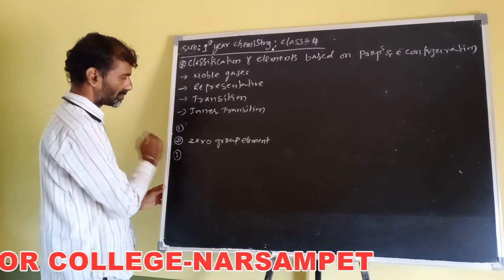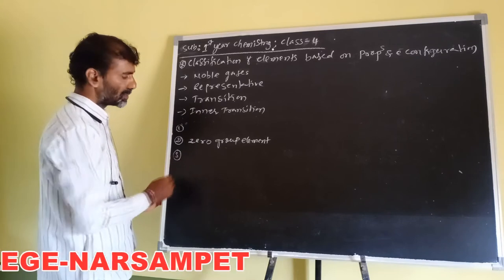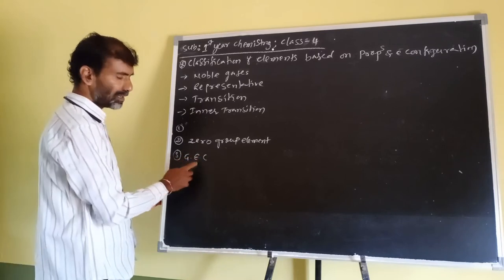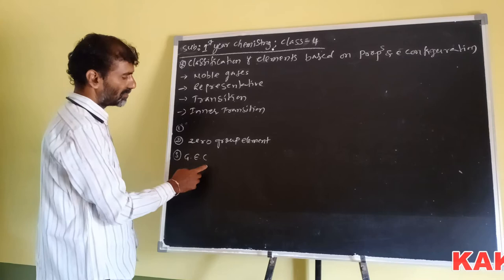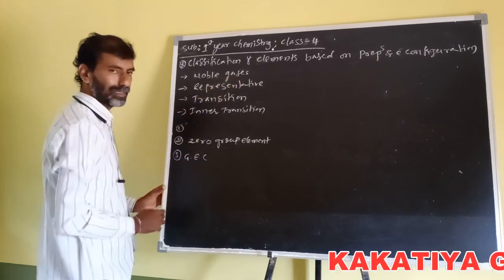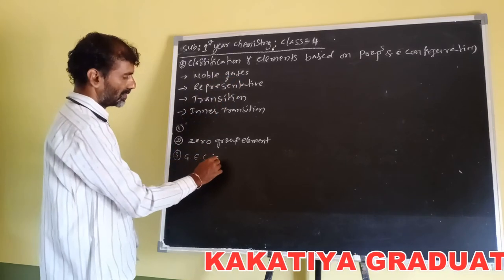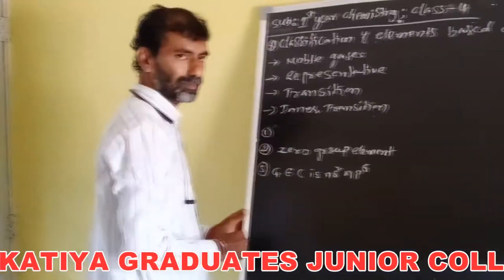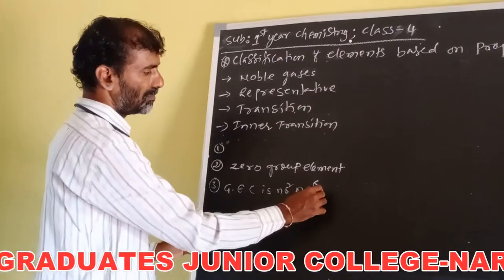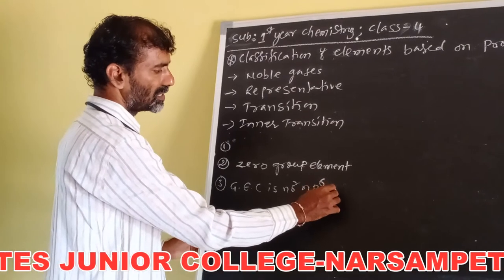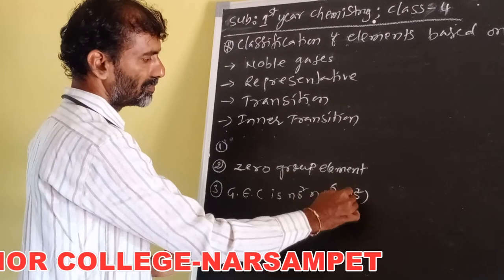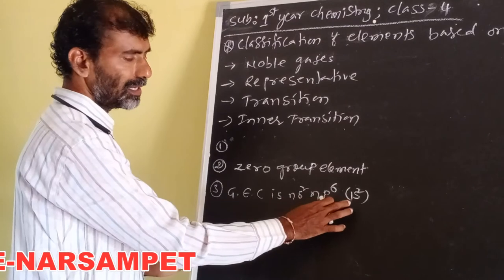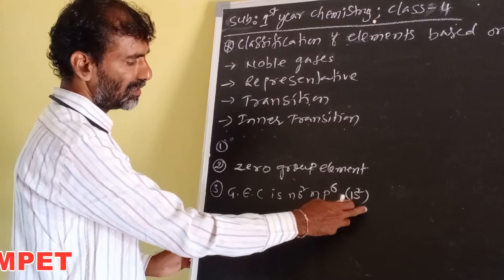The general electronic configuration of noble gases is ns2, np6, except helium whose electronic configuration is 1s2.